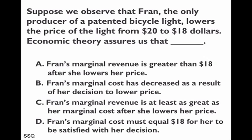This question has to do with the marginal revenue and marginal cost decision — how much to produce for a monopoly. The question reads: Suppose we observe that Fran, the only producer of a patented bicycle light — a monopolist — lowers the price of a light from $20 to $18. Economic theory assures us that what?